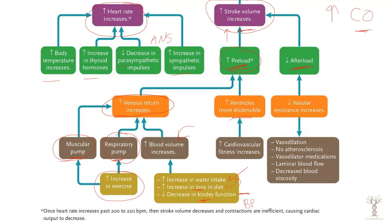Preload is also affected by how distensible your ventricles are. If you can increase the amount they can stretch, you can increase the volume — the end diastolic volume. This is primarily based on your cardiovascular fitness. Afterload is all about where the blood is going after it's ejected from the heart, and this is all about vascular resistance. If you decrease vascular resistance, you decrease afterload, which increases stroke volume and increases cardiac output. We do not want vascular resistance if we want to increase our cardiac output.